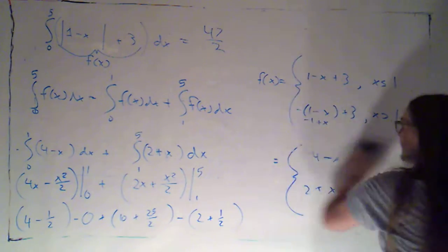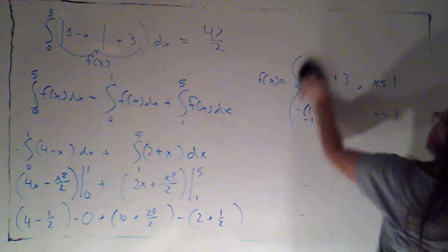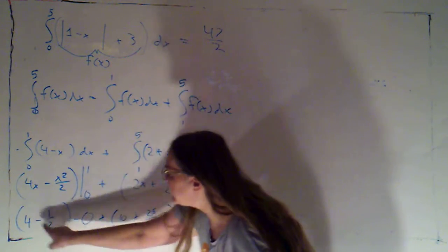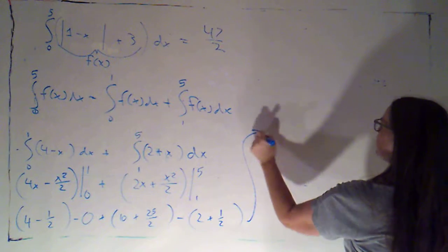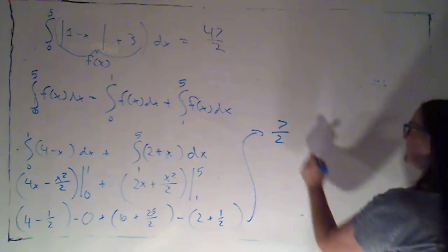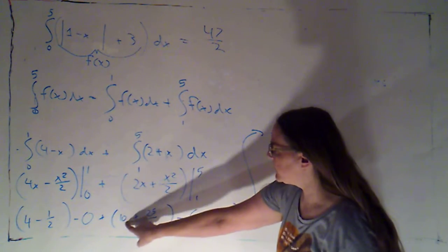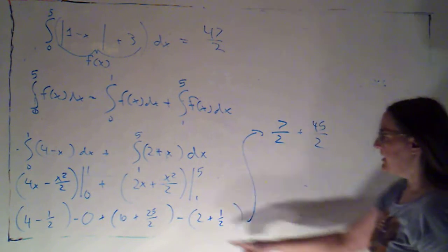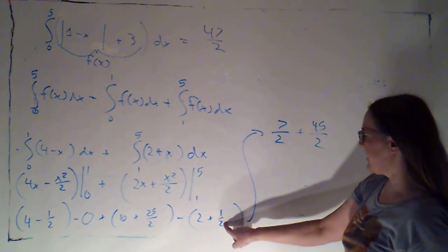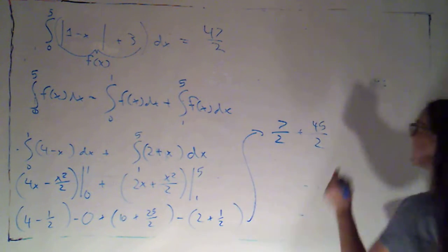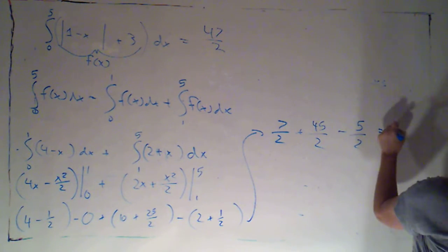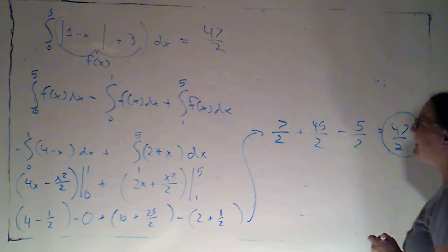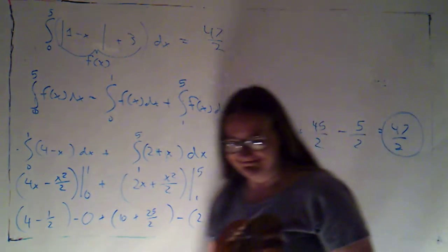Alright, so now we've just got some arithmetic to do, we can handle this. Excellent, excellent. So that's 8 halves minus 1 half, so that's going to be 7 halves, plus this would be 20 halves plus 25 halves, that's 45 halves. This would be 4 halves plus 1 half, so that's 5 halves that we're subtracting. And that is going to be 47 halves. Alright, good stuff, alright good stuff.